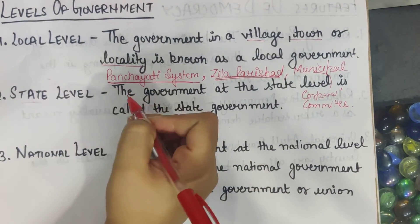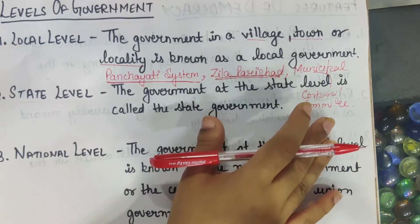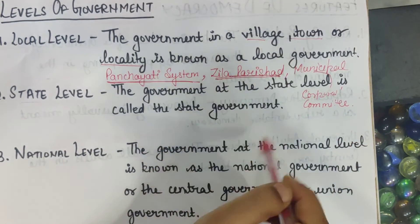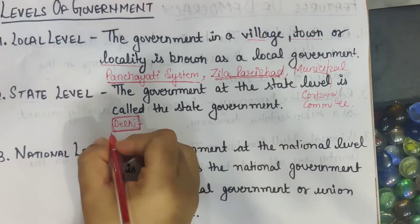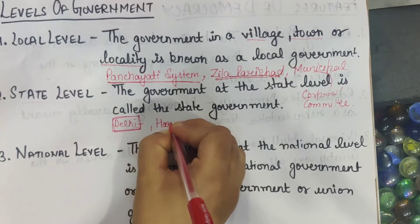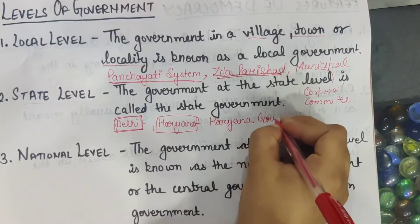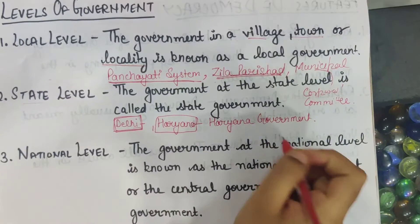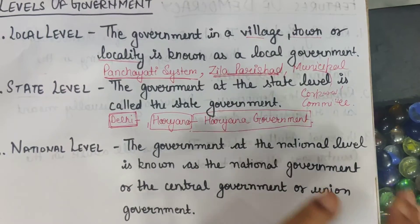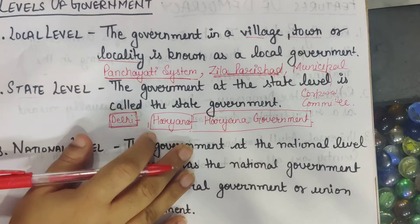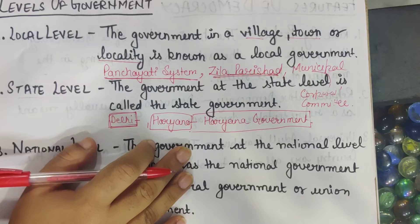If your problem is not solved at one level, you can go to the other level and then to the next level. The second part is the state level — the government at the state level is called the state government. State level means these governments deal with issues related to the whole state. For example, the state government of Delhi takes care of issues related to Delhi; the Haryana government for Haryana; Punjab, Bihar, Gujarat — every state has their own government.